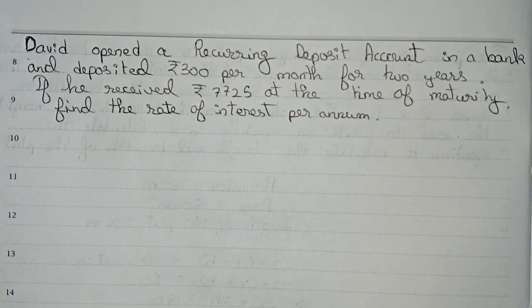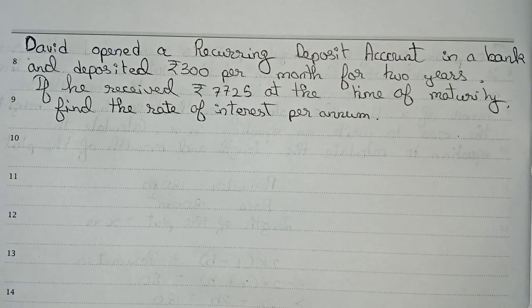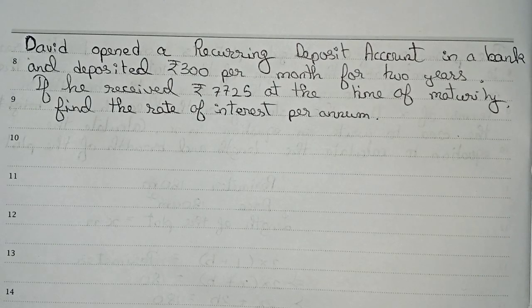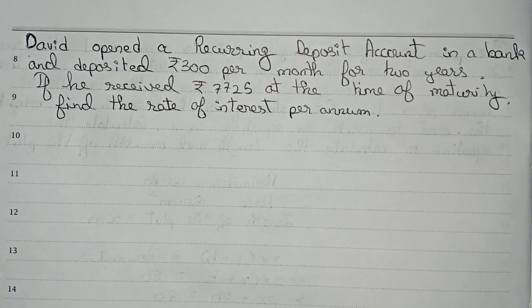Hello guys, welcome to this video. In this video, the question is: David opened a recurring deposit account in a bank and deposited rupees 300 per month for two years. If he received 7725 rupees at the time of maturity, find the rate of interest per annum. So this is our question to solve. First we'll get all the information that are being given.